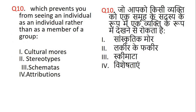Question number 10. Which prevents you from seeing an individual as an individual rather than a member of a group? The right answer is 3, that is schemata.